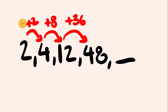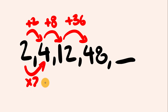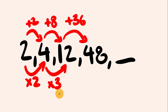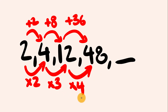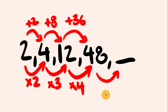Let's have a look at multiplication. 2 times 2 is 4. 4 times 3 is 12. 12 times 4 is 48. There's the pattern — we're multiplying by an increasing amount each time, increasing by 1. So for the next value, we multiply by 5: 48 multiplied by 5 is 240.